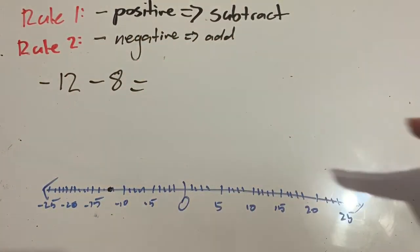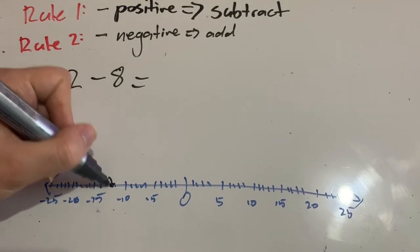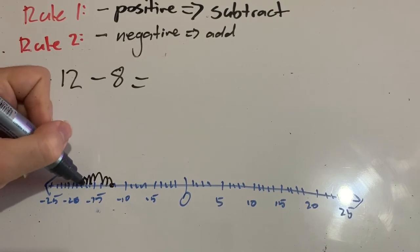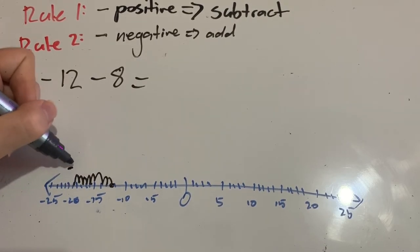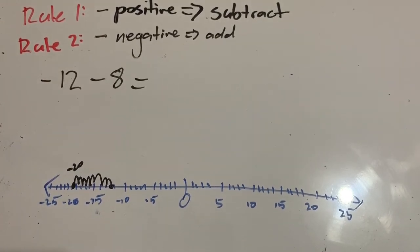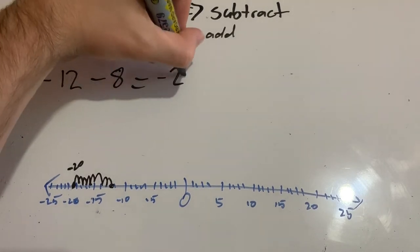When we head across this way along our number line, we are getting smaller. So I'm going to jump, make 8 jumps. One, two, three, four, five, six, seven, eight. And that has landed me here on negative 20. So my solution here to negative 12 minus 8 is negative 20.